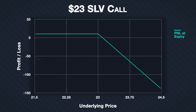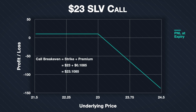The formula for the break-even point of a call is strike price plus premium paid, and this calculation is the same for both buyer and seller. Using the total credit including fees of $0.1085 per share, the break-even point is $23 + $0.1085 = $23.1085. This is the point at which the profit or loss line crosses the x-axis. Because we are the seller, any price higher than this will result in a loss, and any price lower to the left will result in a profit.